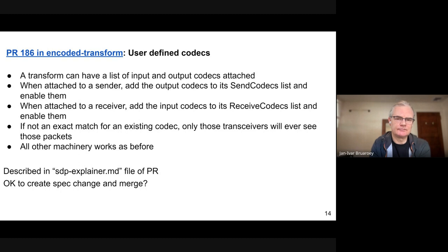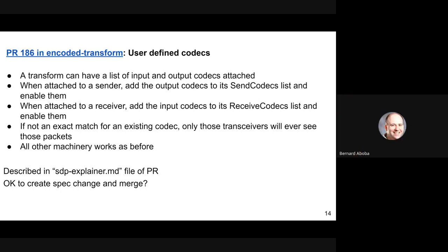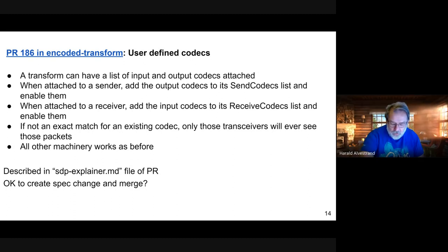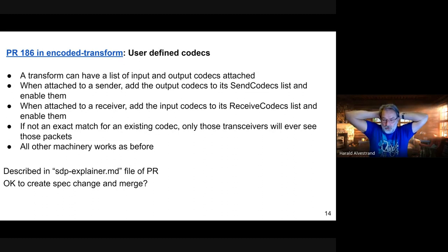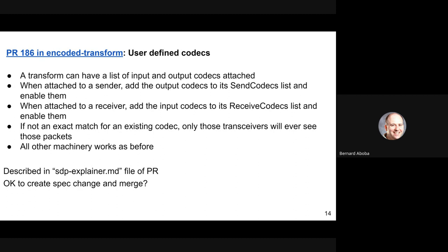There's a comment that media capabilities doesn't have any way to look at directionality — I guess you choose the encoder or decoder. You have to make two calls to media capabilities to figure out whether you can use the same codec for encode and decode. The question is: if something is receive-only, should it only show up in the decoder side of media capabilities? The answer seems to be yes — that's what the media capabilities spec says.